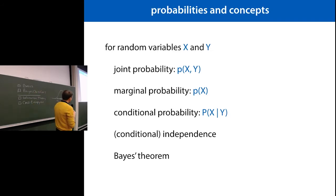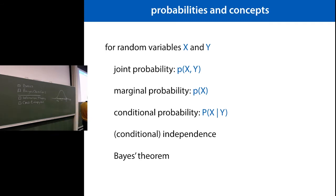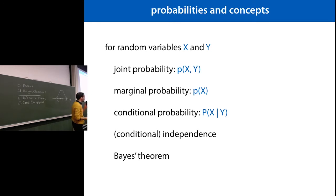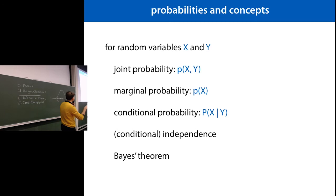Let's run through some very basic probability concepts. We have two random variables, X and Y. The joint probability is simply the probability that X takes one value and Y takes another. The marginal probability is where we only care about one of them. The conditional probability is the probability of X given Y — if we know Y, what is the probability of X? There's also conditional independence and Bayes' theorem, which I'll show later.